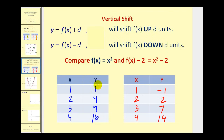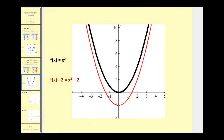Comparing the Y values of the two functions, notice that all of the Y values for F of X minus 2 are 2 less than the Y values of F of X. Therefore, this function would be 2 units lower than the original. Here's the graph of those two functions — pick any point on the original black function and the corresponding point on the translated function is 2 units lower.